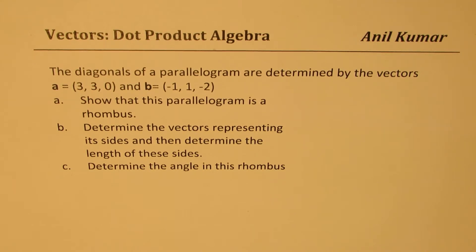The question here is, the diagonals of a parallelogram are determined by vectors A, 3, 3, 0 and B, minus 1, 1, minus 2. Show that this parallelogram is a rhombus.